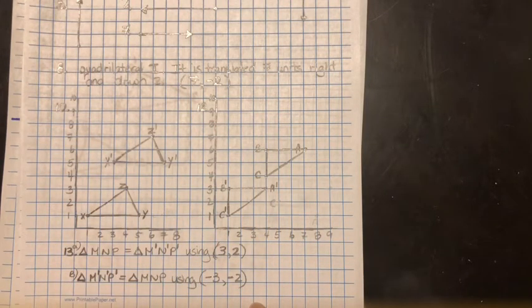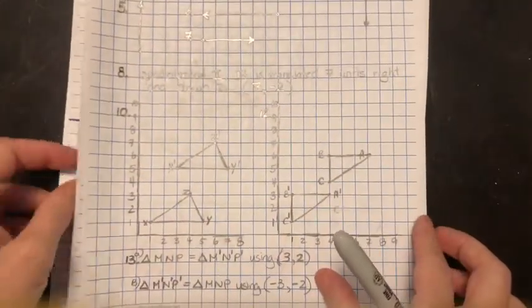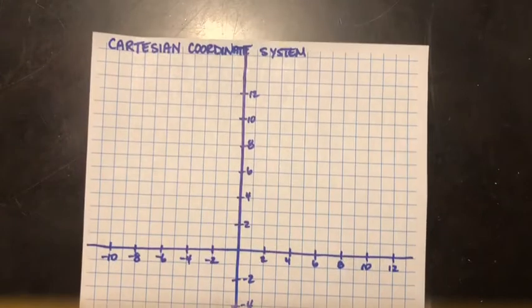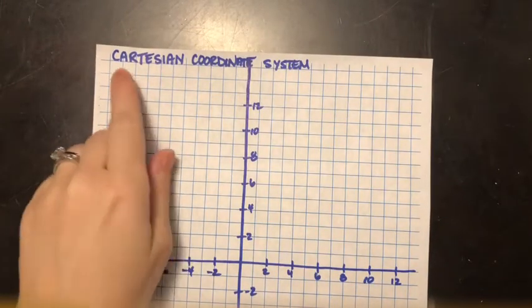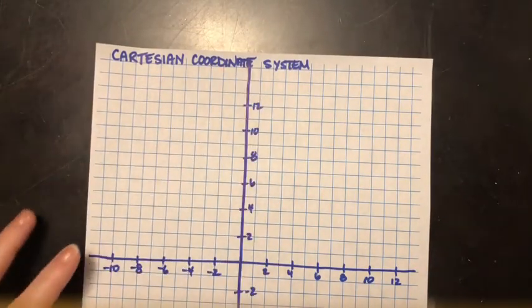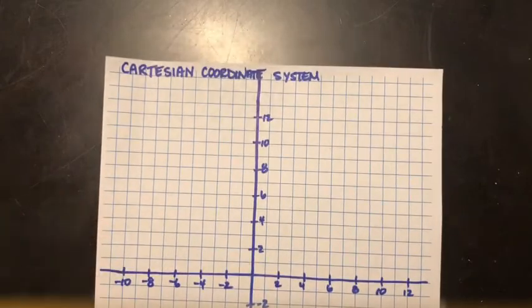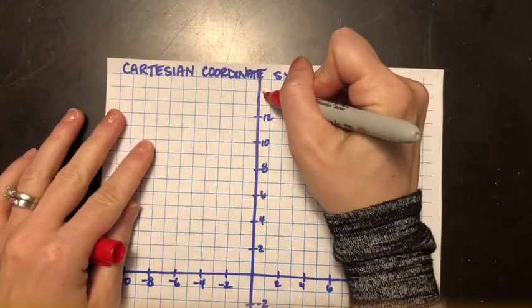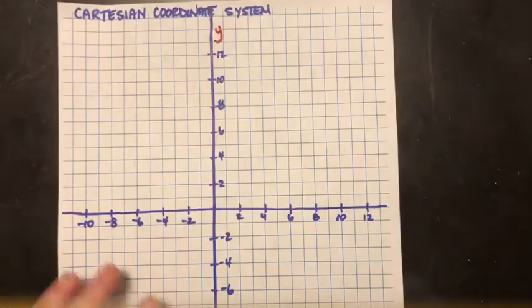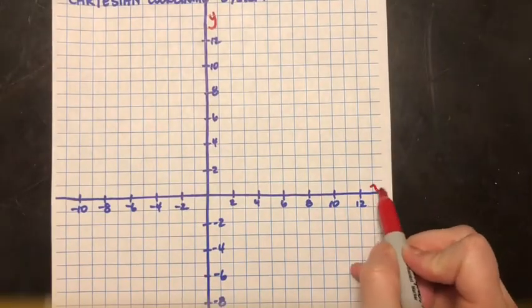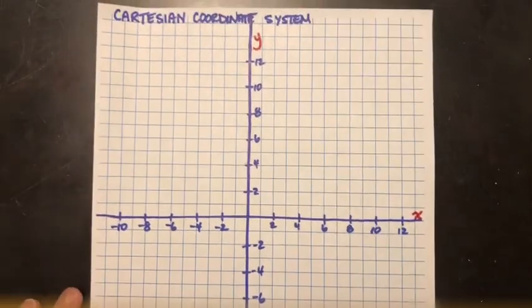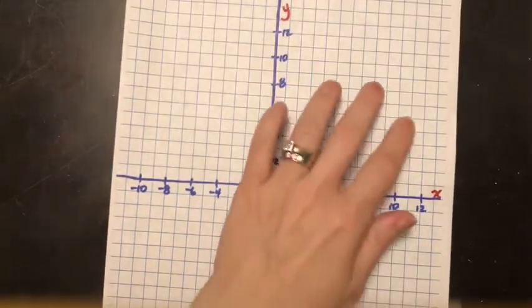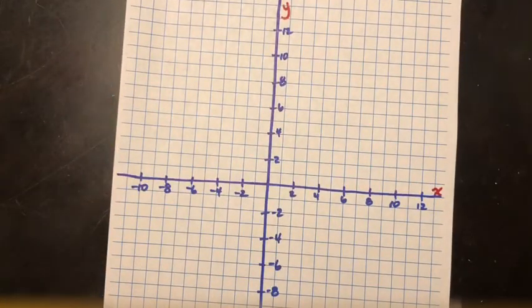Okay, so the Cartesian coordinate plane looks like this, and this is how you write Cartesian coordinate system here. So this is still your y-axis here, this is still your x-axis here, but now we have negative numbers. So when I am looking at this Cartesian coordinate plane, it is divided into four separate what we call quadrants.